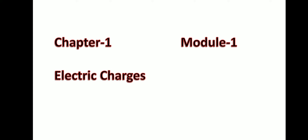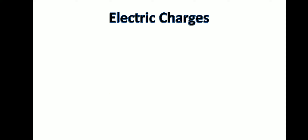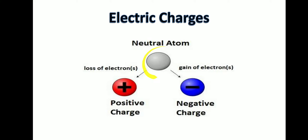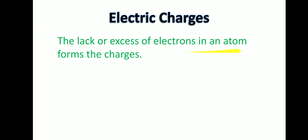Today we are with Module 1 of Chapter 1, which is electric charges. What are electric charges? Let's take an example of a neutral atom. When this neutral atom loses electrons, it gets positively charged. But when this neutral atom gains or receives electrons, it gets negatively charged. So the formation of positive or negative charge depends upon the loss or gain of electrons.